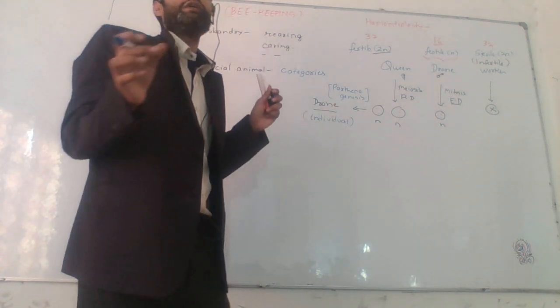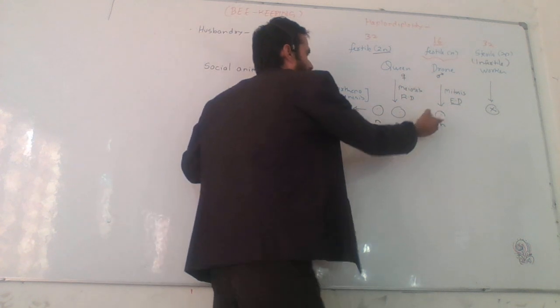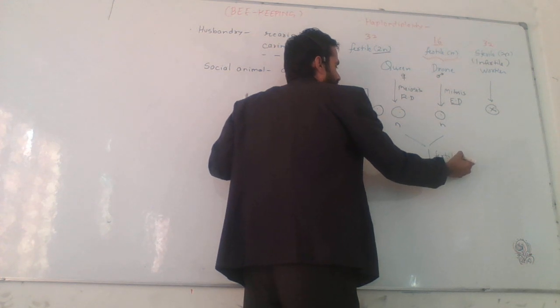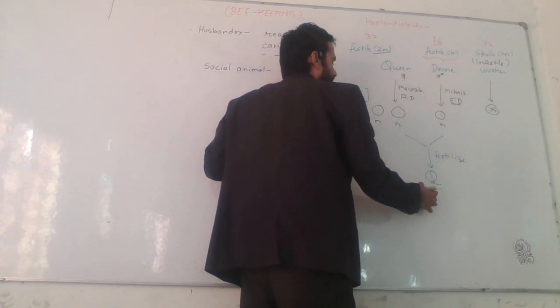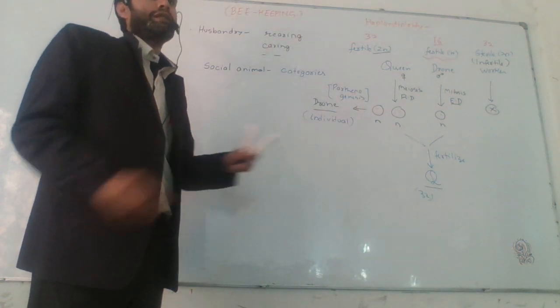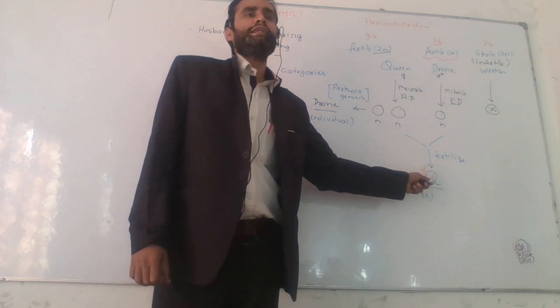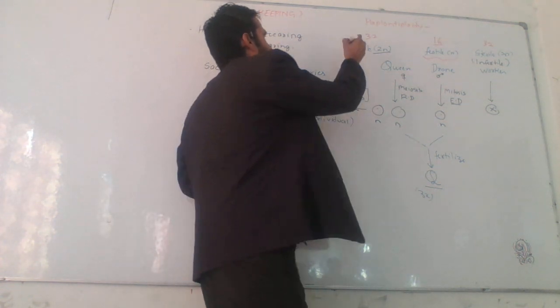Now by the general fertilization, these two gametes will fuse. It will fertilize. After fertilization, only queen will be formed because queen is having the 32 chromosomes. And it is sterile or fertile? Queen is always fertile.